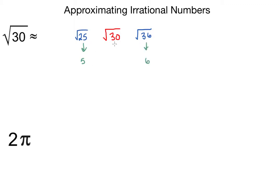So a good approximation for the square root of 30 is approximately five point something. We know it's five point something because it falls in between these two perfect squares. That's not an accurate enough guess.